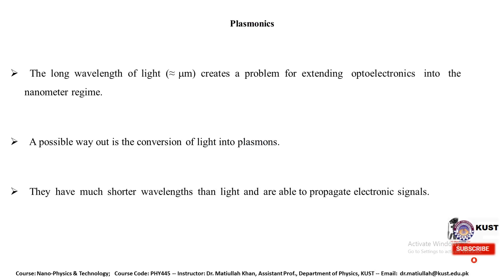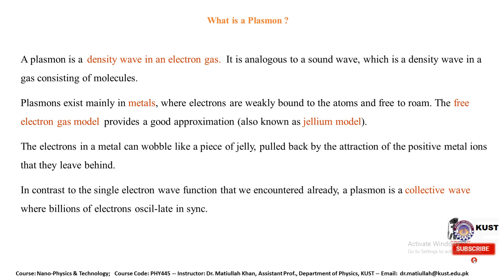The long wavelength of light creates a problem for extending electronics into the nanometer regime. A possible way out is the conversion of light into plasmons, which have much shorter wavelengths than light and are able to propagate electronic signals. So basically, we need to know what plasmons are.